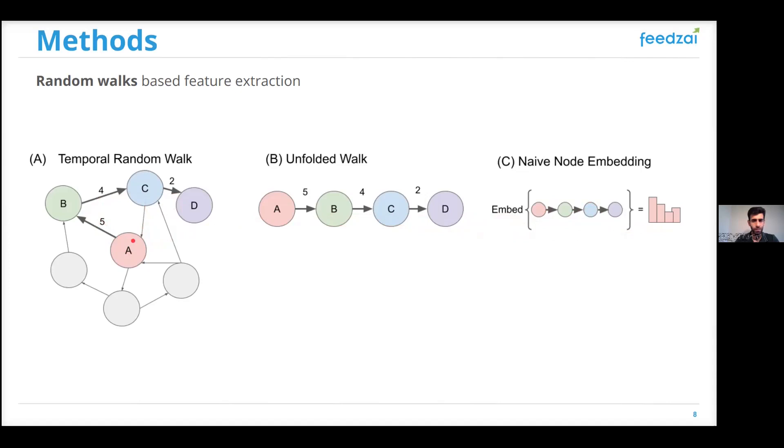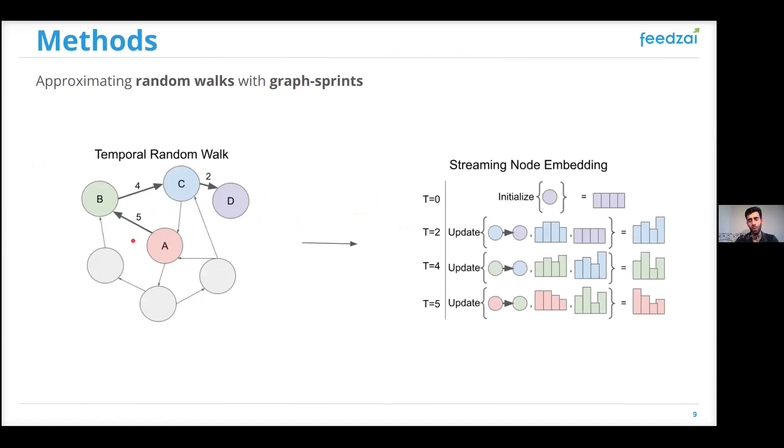In Graph Sprints, instead of performing the RandomWalks, we propose an approximation for these walks in a way that is similar to moving garbage. Given the same example graph, and since the graph is being built over time, it starts at timestamp 0, let's say with node D, that has a uniform embedding. And at timestamp 2, when node C arrives,